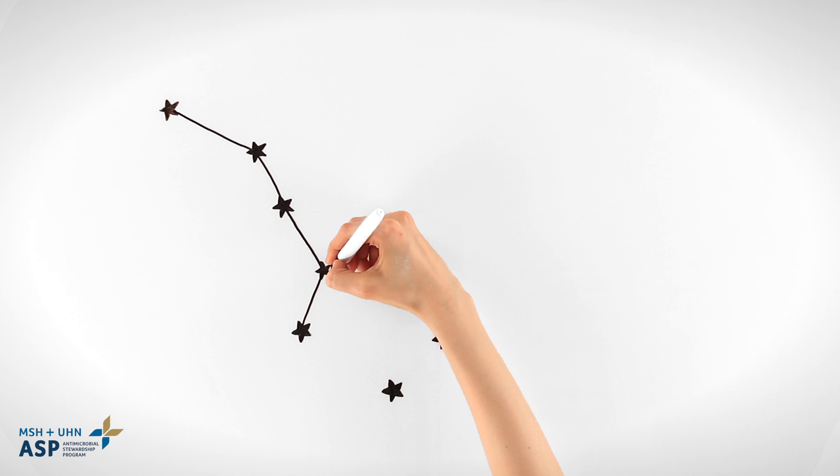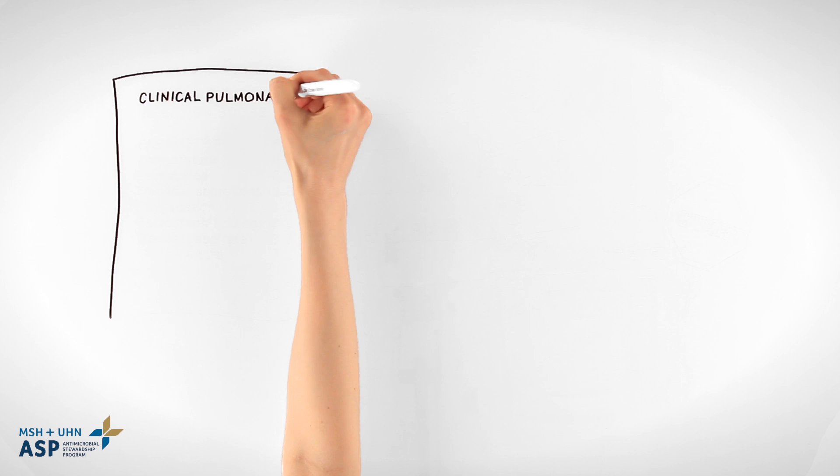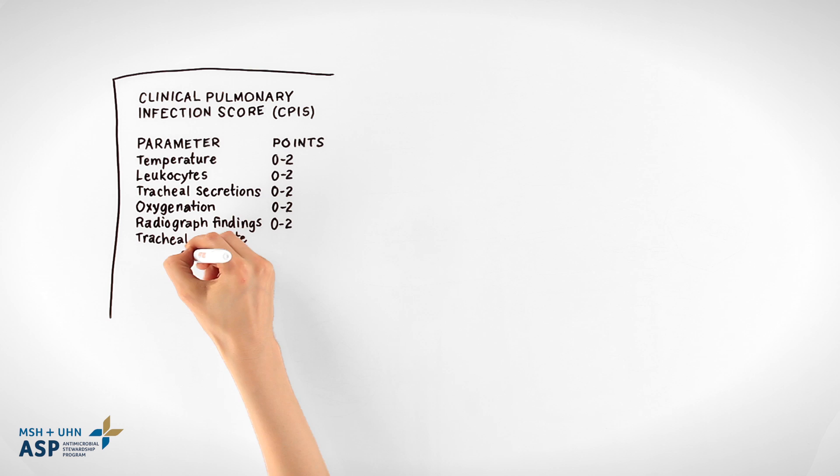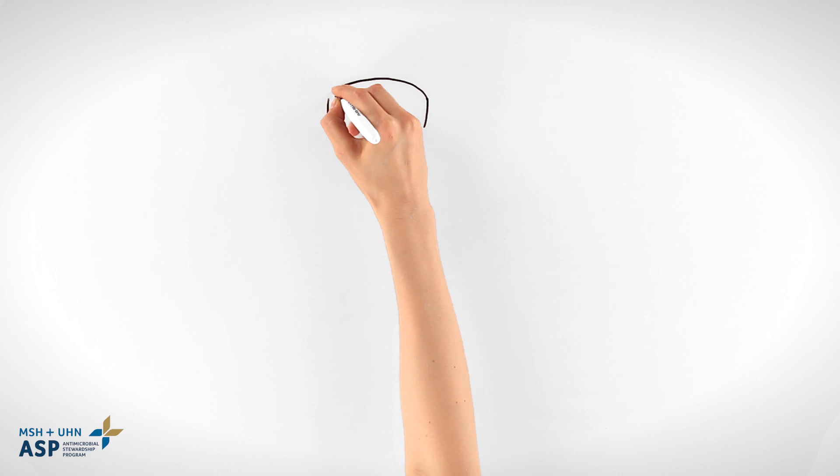Like all pneumonia syndromes, the diagnosis is based on the appropriate constellation of clinical signs and symptoms, and can mimic other syndromes like heart failure or pulmonary embolism. A scoring tool such as the clinical pulmonary infection score, CPIS, can aid in the diagnosis of HAP or VAP, and a score greater than 6 correlates with the presence of high bacterial counts in the lungs. It can be used to risk stratify patients and to guide both starting and stopping antibiotics.